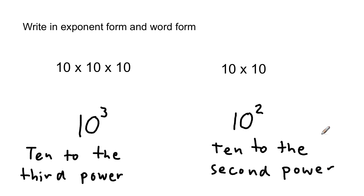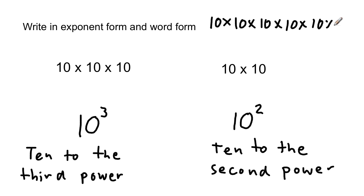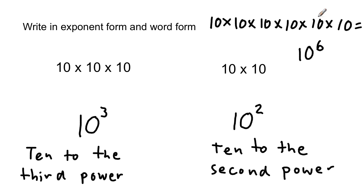I'm going to give you a tricky one. How about this one: 10 times 10 times 10 times 10 times 10 times 10 times 10. That equals 1, 2, 3, 4, 5, 6 tens — wait, let me count again — that's 10 to the sixth power. It's really easy: you just count up how many instances you see the base number, and that becomes your exponent. And then just naming it in words.